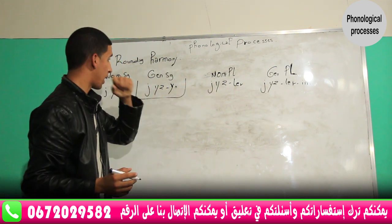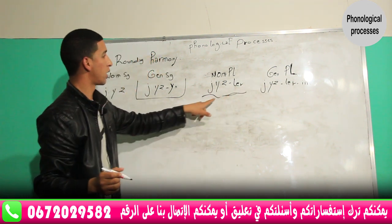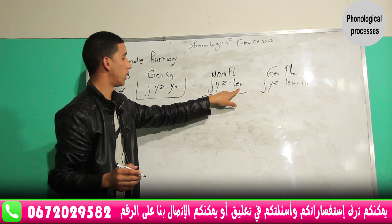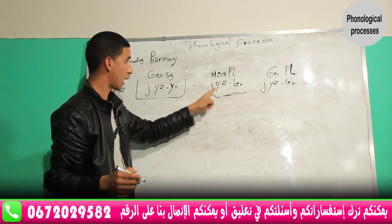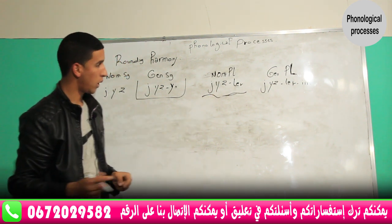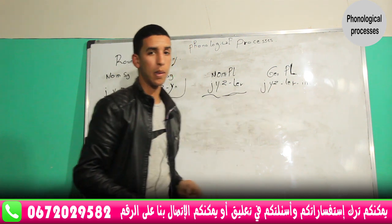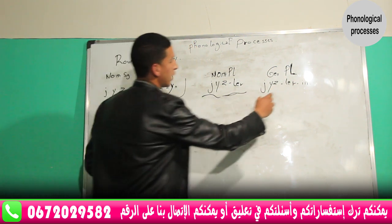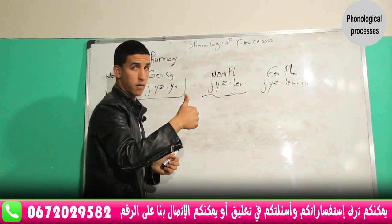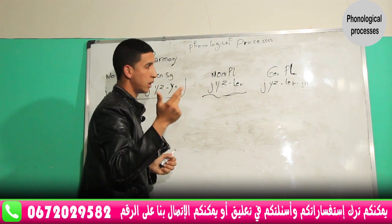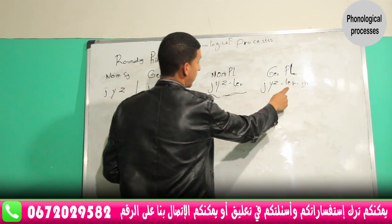In nominative plural, we are not talking about rounding harmony because the suffix vowel does not agree with the stem vowel. In genitive plural, we add a suffix vowel which is a high unround vowel, so it agrees with a mid unround vowel.